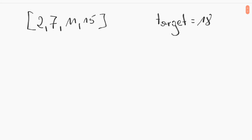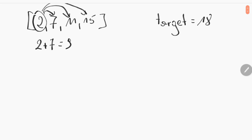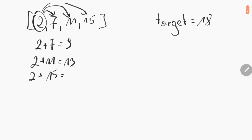The first and most simple solution is to choose the first element from the array — in this case it will be 2 — and add it up with each of the following numbers. In the first iteration we have 2+7=9, in the second 2+11=13, and 2+15=17. We passed through all numbers and there is no target.